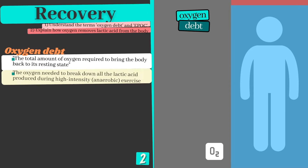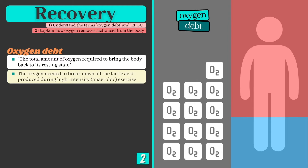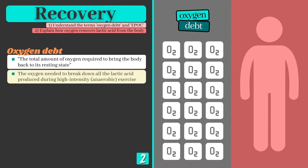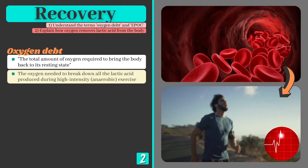The total amount of oxygen needed to bring the body back to its resting state is known as oxygen debt, or the oxygen that needs to be repaid after anaerobic exercise. In order to repay this debt we need to consume and transport more oxygen than usual to the impaired muscle tissue.